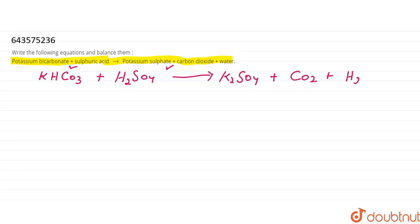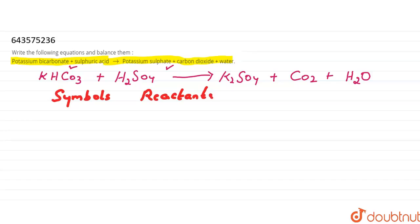Now we have to balance this equation. For this, let us make a column with symbols, reactants, and products, and we'll count the number of entities on both sides and equalize them.